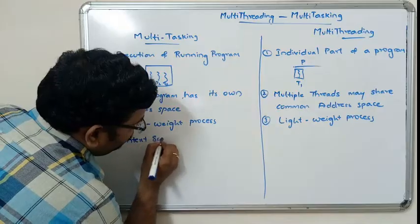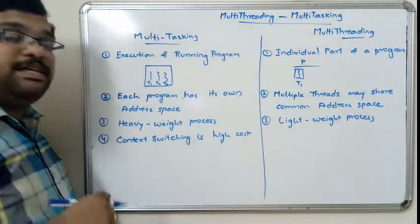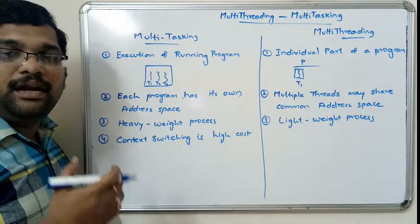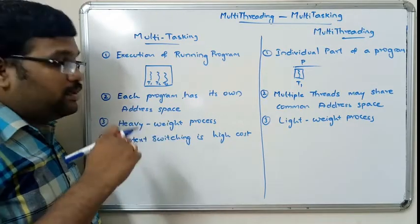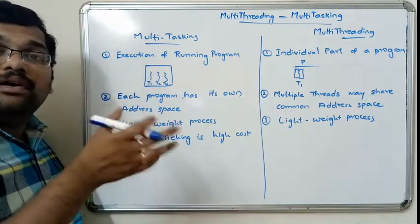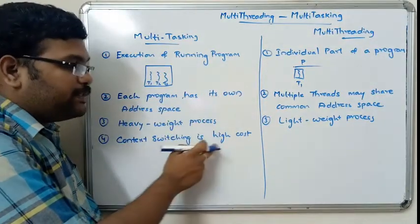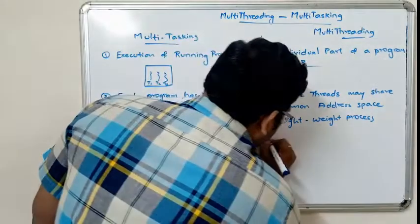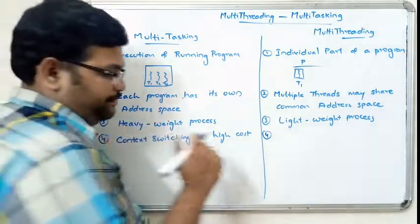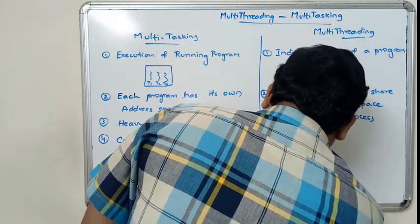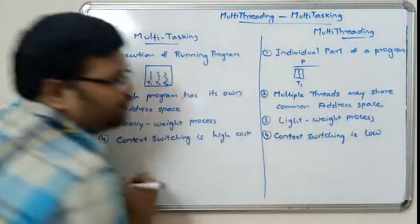Context switching — that is, switching from one process to another — is high cost in multitasking. If one process has higher priority, the other goes into a blocked or waiting state. Since each program has its own address space, this switching is expensive. In multithreading, multiple threads share a common address space, so switching between threads is very easy, making context switching low cost and simple.